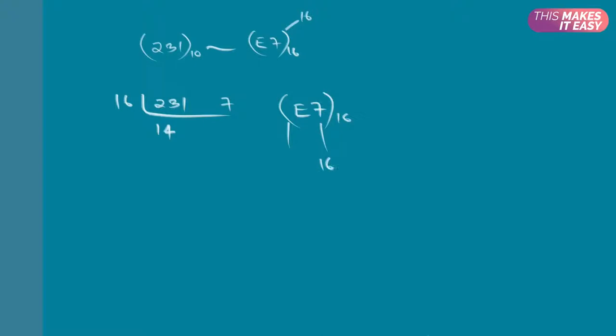Here it is base 16 raised to 0, 16 raised to 1. So it's 1, 16. If we multiply E, which is basically 14 times 16, plus 7 times 1, we will get 231.